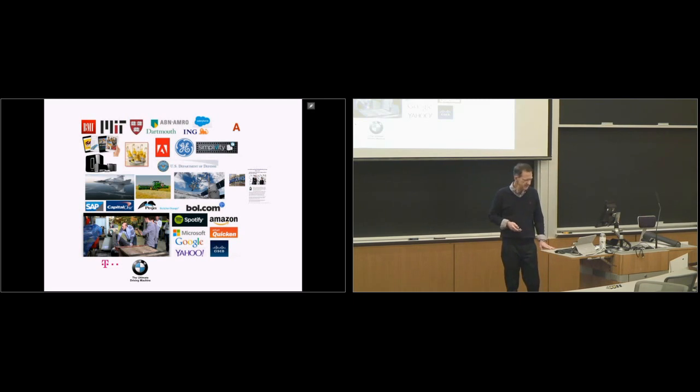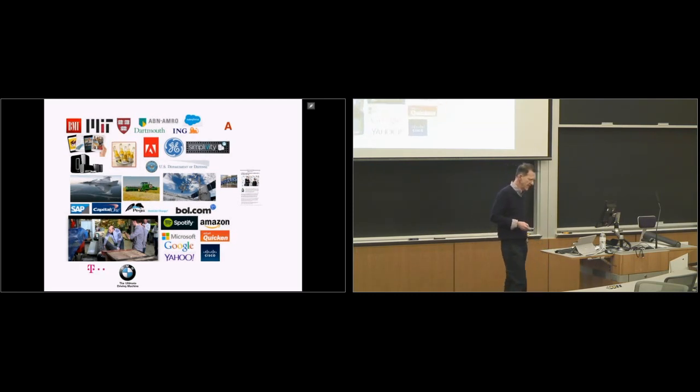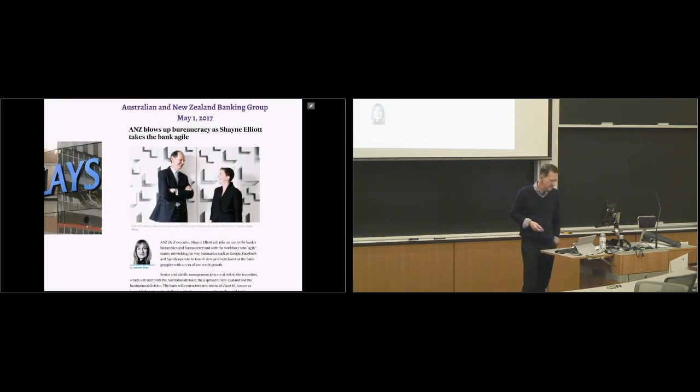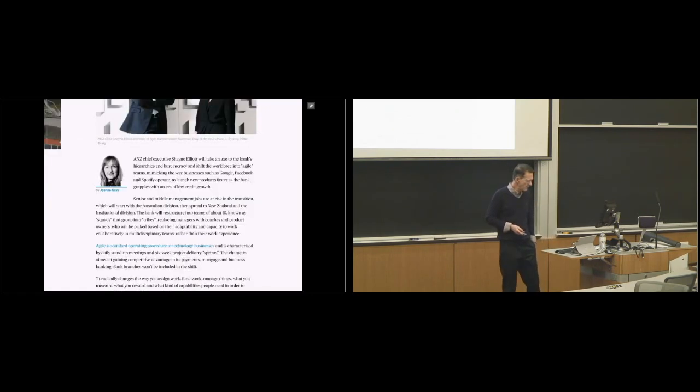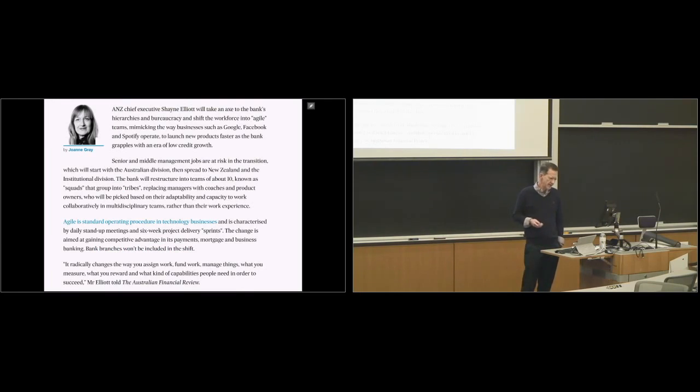In the financial space, we see a lot of movement with folks like Barclay that has made a worldwide initiative to transform. And just a couple weeks ago, another one announced, the largest group in Australia, ANZ, says they're going to blow up their bureaucracy, the CEO says, and make this shift to agile. And they want to be like the Google, Facebook, and Spotify's of the world. And senior and middle management jobs are at risk because, as we'll discuss, the roles of a manager can substantially change.